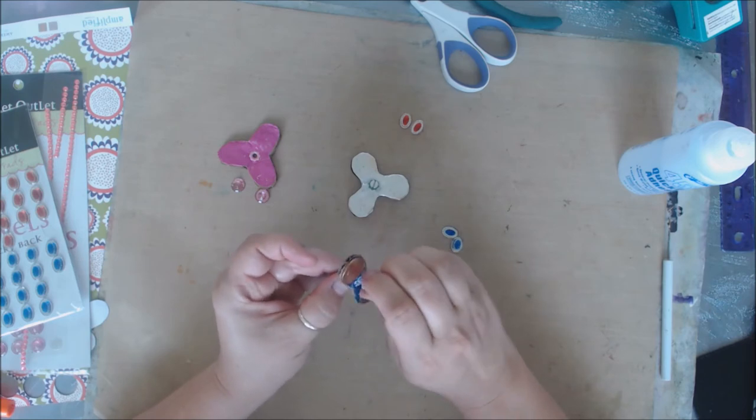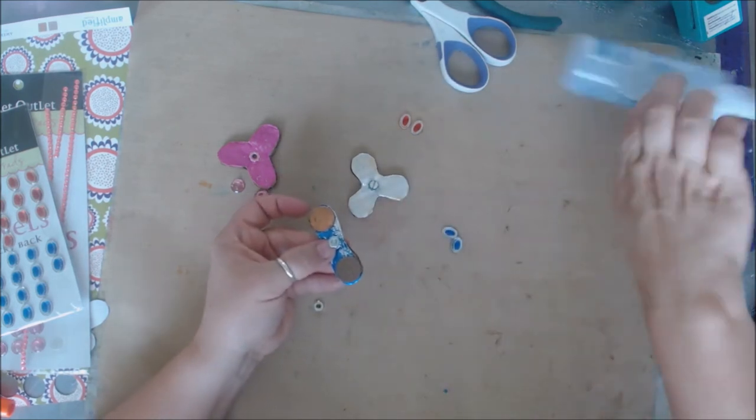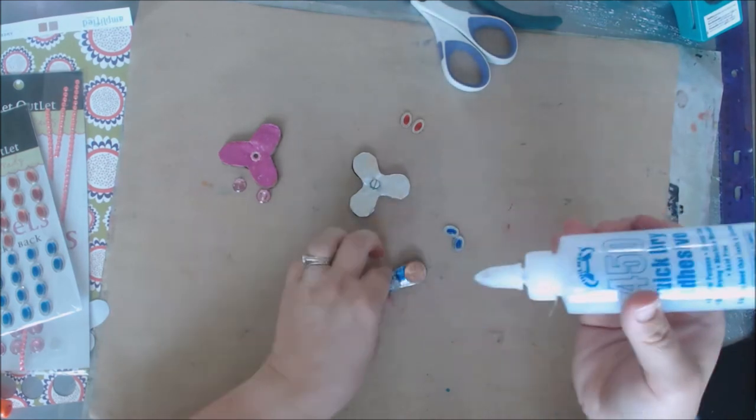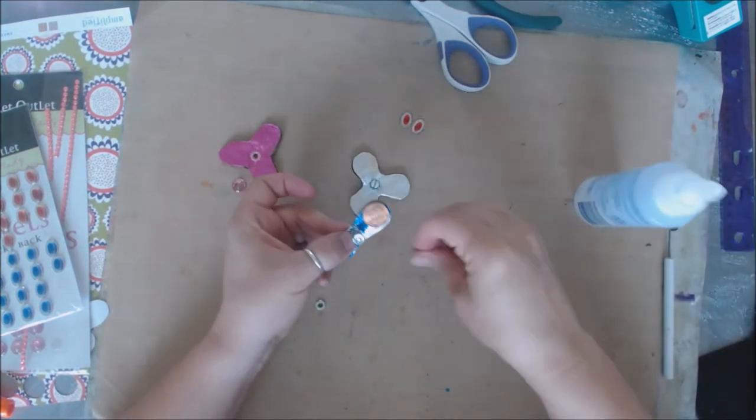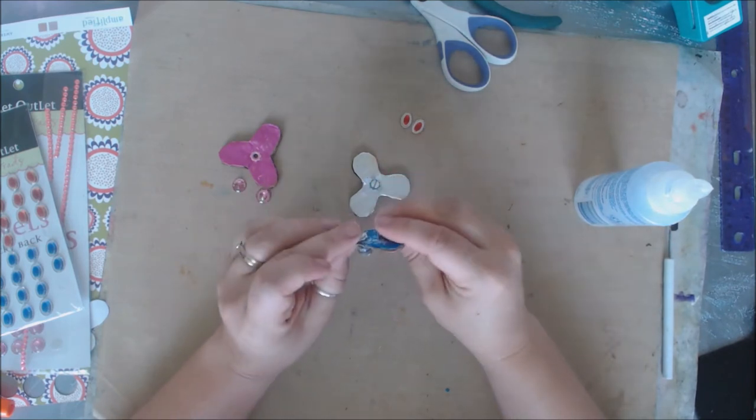As soon as I can get the screw on there, so nice and flat. And on this side really simple, put some glue, same glue that's holding everything else together, and then just put a pretty little gem right there.